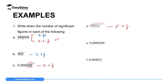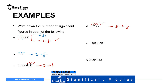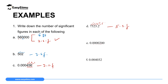Number E: 0.0000200. The zeros in front of the number are not significant. Starting from 2, that is the first significant figure, the next zero is the second, and the last zero is the third — giving three significant figures.